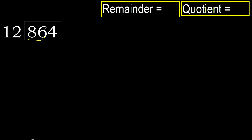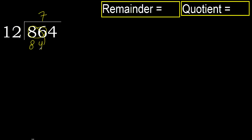With 86, 12 multiplied by which number is nearest to 86 but not greater? 12 multiplied by 9 is greater. Multiplied by 8 — 96 is greater. Multiplied by 7 — 84 is not greater.